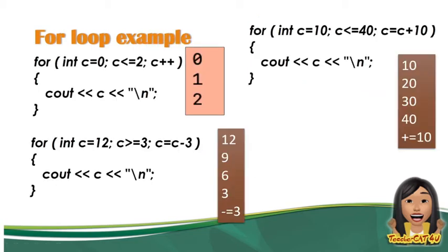Ito yung sample program ng for loop. Mag-focus muna tayo sa output. Ang output ay 0, 1, and 2. Kung mapapansin ninyo yung output, pataas yung value — ibig sabihin, increment siya. Nag-i-increment siya ng 1. Kasi 0 plus 1 is equal to 1, at 1 plus 1 is equal to 2.